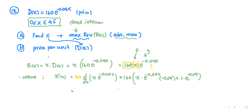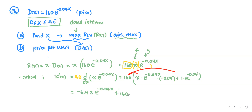Let's go one step at a time. Distributing: 160 times 0.04 — it's on the negative side — gives negative 6.4. So we get negative 6.4x·e^(-0.04x) plus 160·e^(-0.04x). This is R prime.